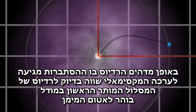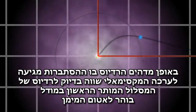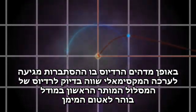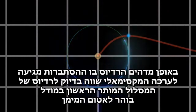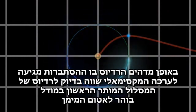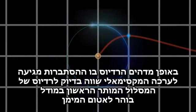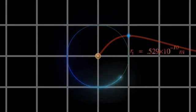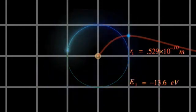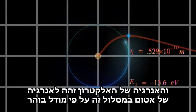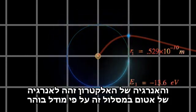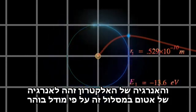It reaches a maximum value and then decreases again as the electron cloud thins to almost nothing at large distances. Amazingly, the radius where the probability reaches a maximum is precisely equal to the radius of the first allowed orbit of Niels Bohr's model of the hydrogen atom, and its energy is exactly equal to the energy of an electron in this orbit in the Bohr atom.